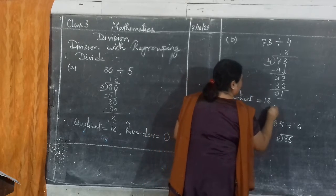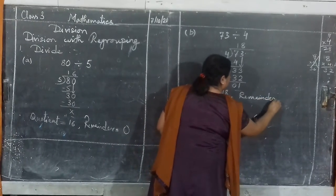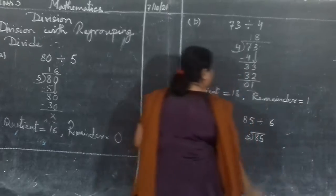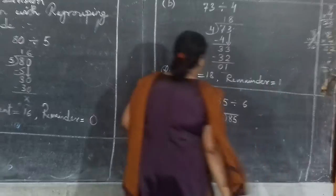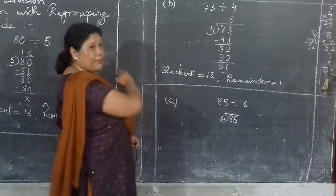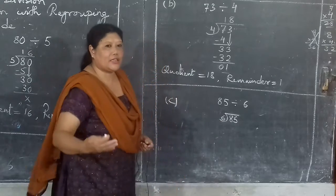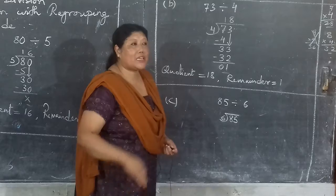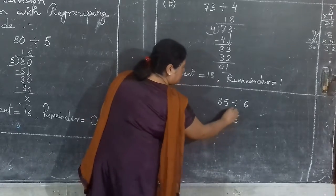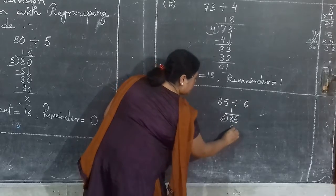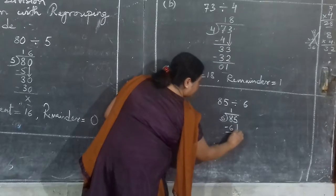Now the last question: 85 is divided by 6. Same like this only, keep on dividing. 8 divided by 6, how much? It should be closer to 8 or equal to 8. So 6 ones are 6, 6 twos are 12. You cannot write 2 here. 6 ones are 6. So 8 minus 6 is 2, then 5 comes down.